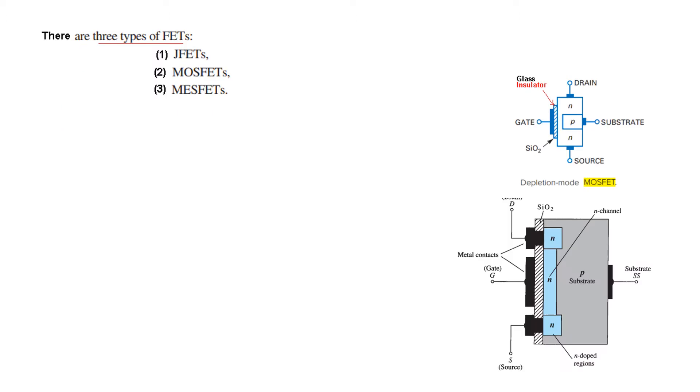Now we have learned JFET and let us recall the various types. So the first one was JFET we have already learned. Then there is another type which is MOSFET which we are going to study now. And then the third type is MESFET.